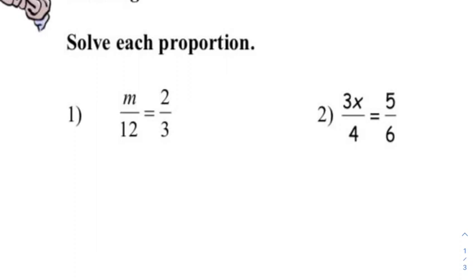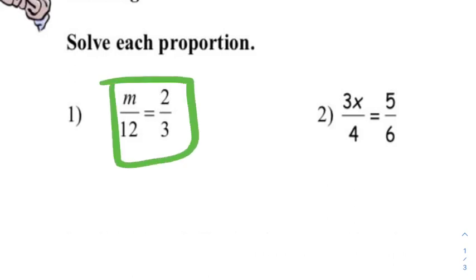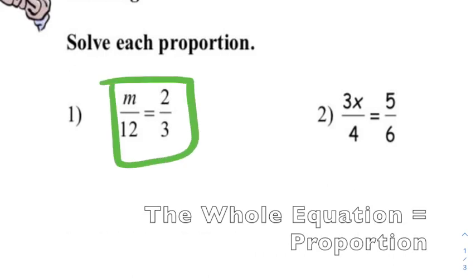If we look at what our first example is going to be, we can see what a ratio and a proportion are. Each of these fractions can be called a ratio and when you set them equal to each other, that is a proportion.